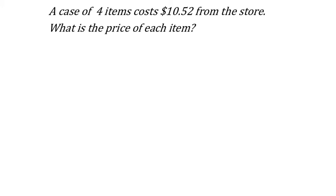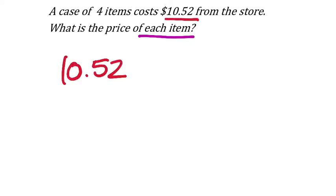A case of four items costs $10.52 from the store. What is the price of each item? We're going to take the $10.52 and divide it by 4. This tells us how much each item is. Typing 10.52 divided by 4 into the calculator — enter — $2.63. If you wanted to check, multiply that by 4 and you get the same thing.